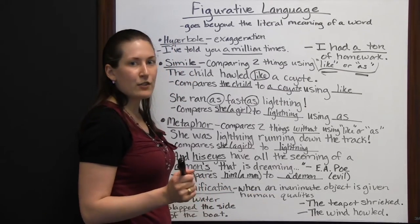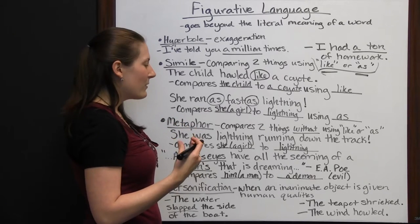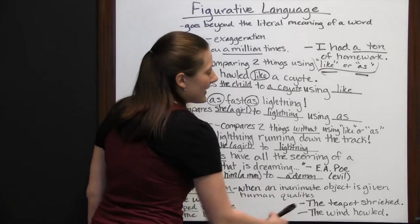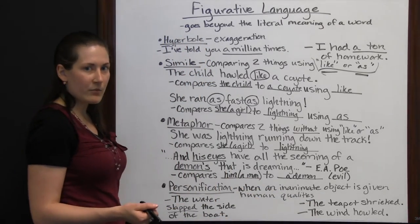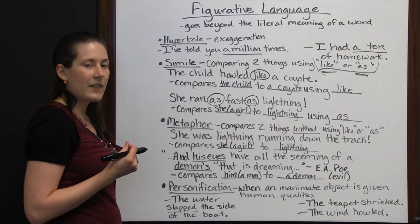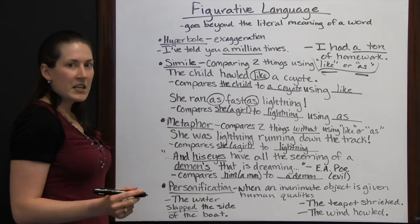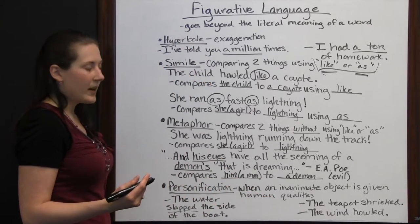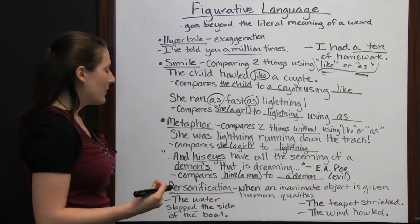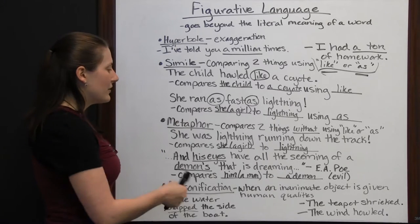Another example: "The teapot shrieked." Shrieking, screaming — that loud sound. You can hear it in your head when you think about the noise a teapot makes, but a teapot isn't actually shrieking like a person would. Or, "The wind howled." Wind can't howl like a wolf would howl, but wind makes that same kind of sound sometimes. The author is trying to put that sound of howling in your mind when describing the wind.